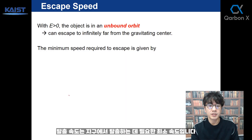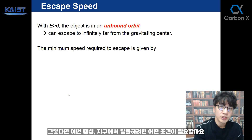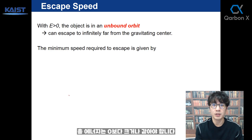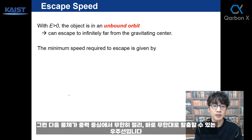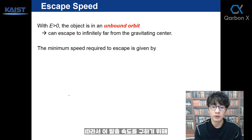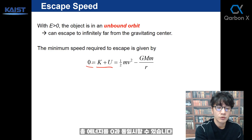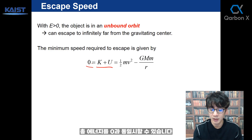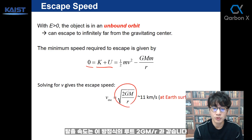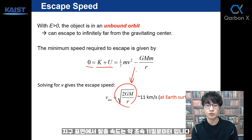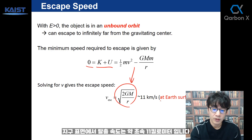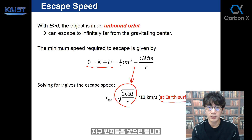Escape speed is the minimum speed required to escape from Earth. To escape from a planet, the total energy must be equal to or greater than zero, so that the spacecraft can reach infinitely far from the gravitating center. Setting total energy equal to zero gives the escape velocity: v equals square root of 2GM over r. From Earth's surface, the escape velocity is around 11 km per second.